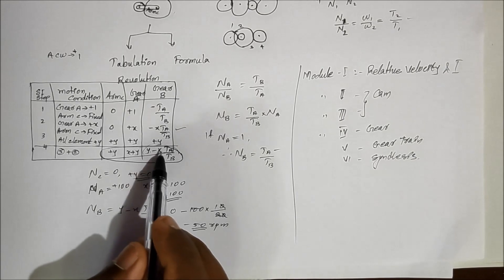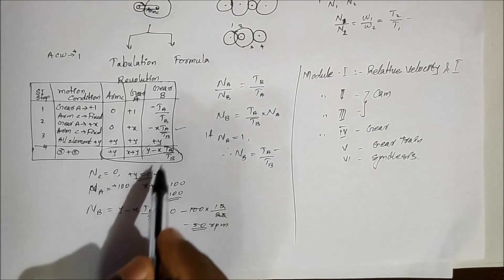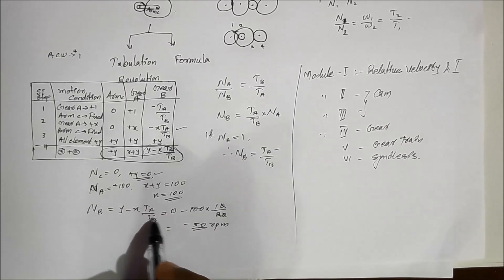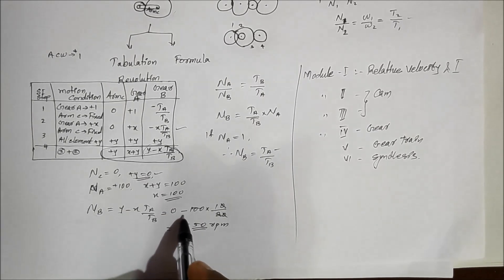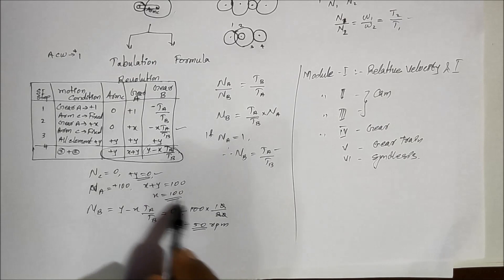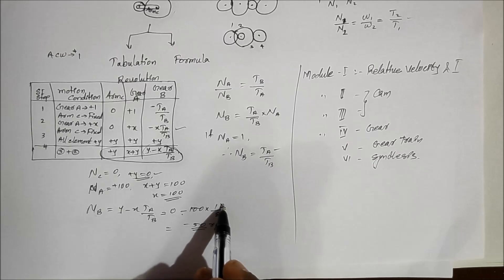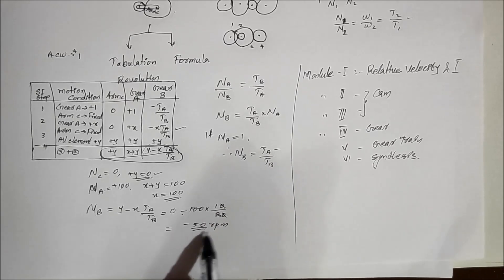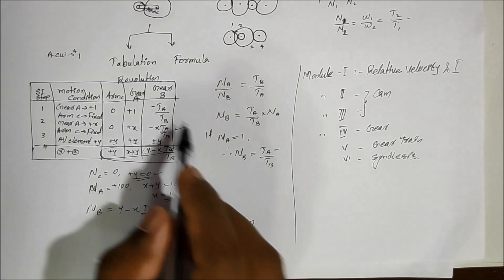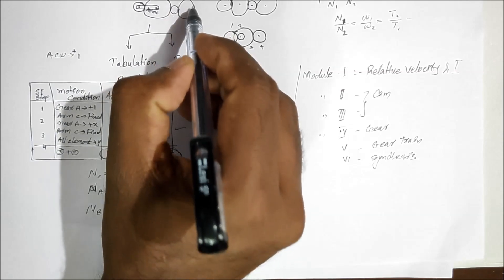Substitute the XY variables and then find the result. With TA by TB equal to 10 by 20, substituting: NB equals 100 minus 100 times 10 by 20, which gives NB equals 100 minus 50 equals minus 50. The negative sign indicates clockwise rotation.